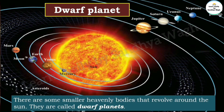In our solar system there are some very small planets that revolve around the sun, just like Earth, Jupiter, Saturn, Venus, and others revolve in their specific orbits. Similarly, there are small planets like Pluto that also revolve around the sun. Because these planets are very small in size, they are called dwarf planets. Earlier, Pluto was also considered a planet in our solar system.